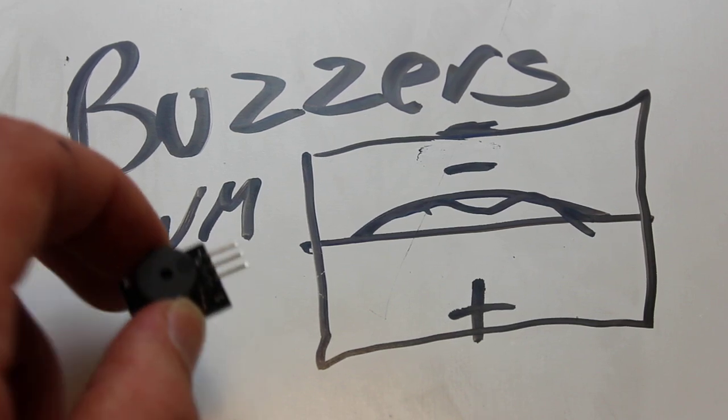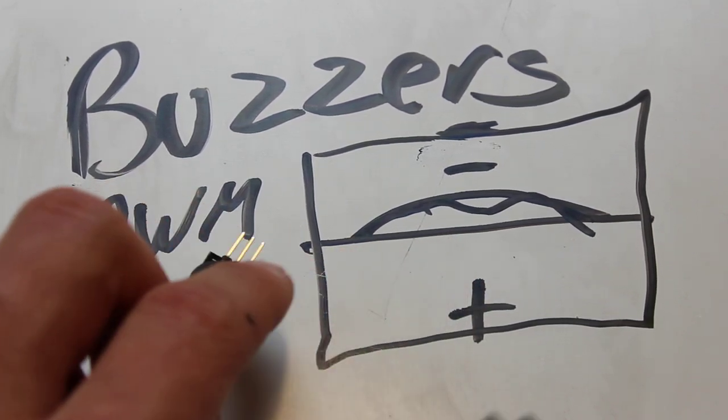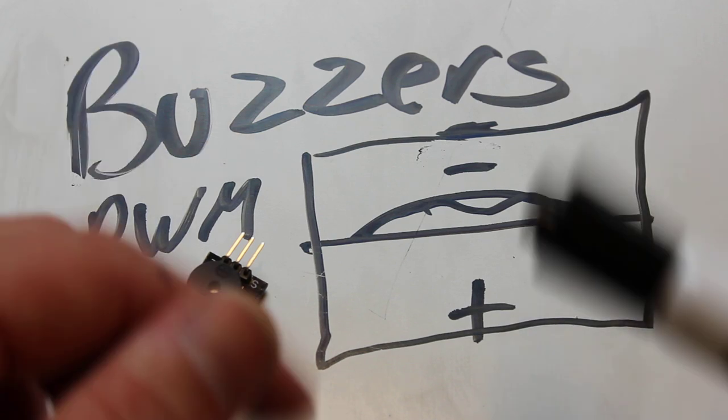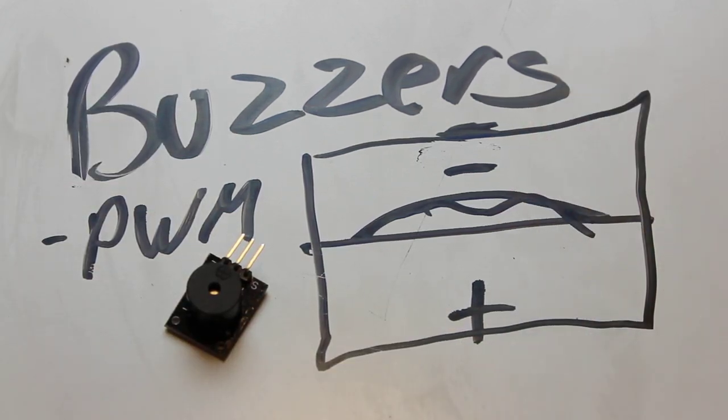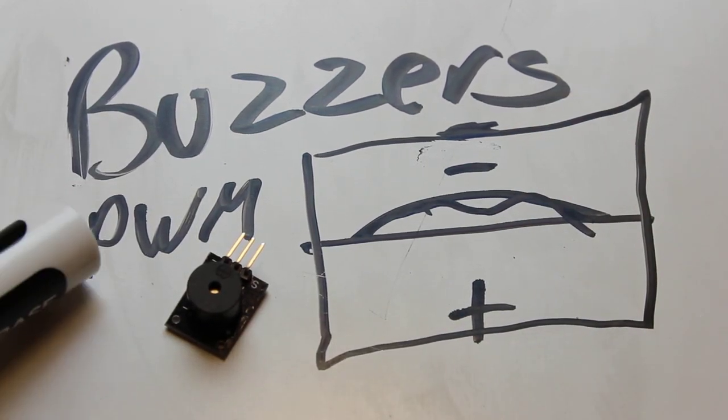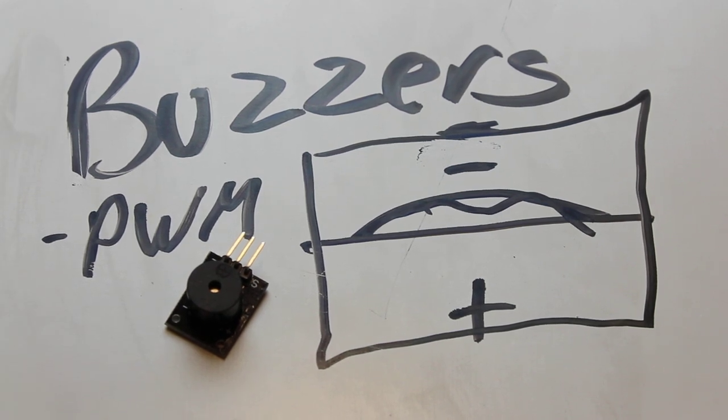That's all that happens. Inside of a piezoelectric buzzer, you have a little metal membrane that's vibrating. You control that vibration by sending a PWM signal to it, and that's all there is to it.